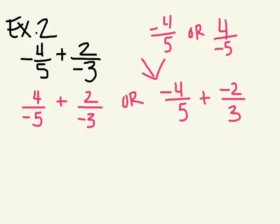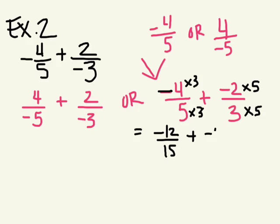Find a common denominator. Anyone know what the common denominator is for this example? Good. So we need to multiply this by 3, multiply the numerator by 3, and multiply this by 5. Okay, so we have, make sure you watch your sign. You have negative 4 times 3 is negative 12 over 15 plus negative 2 times 5 would be negative 10 over 15.